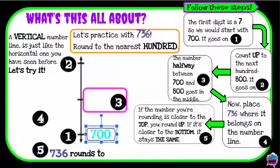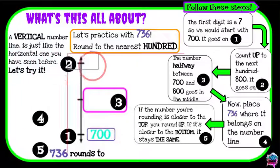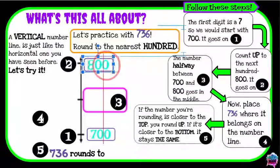Now to find my next number, I'm going to count up by 100 to get the number for the top. So 100 more than 700 is 800, so that's going to go on the top of my number line.